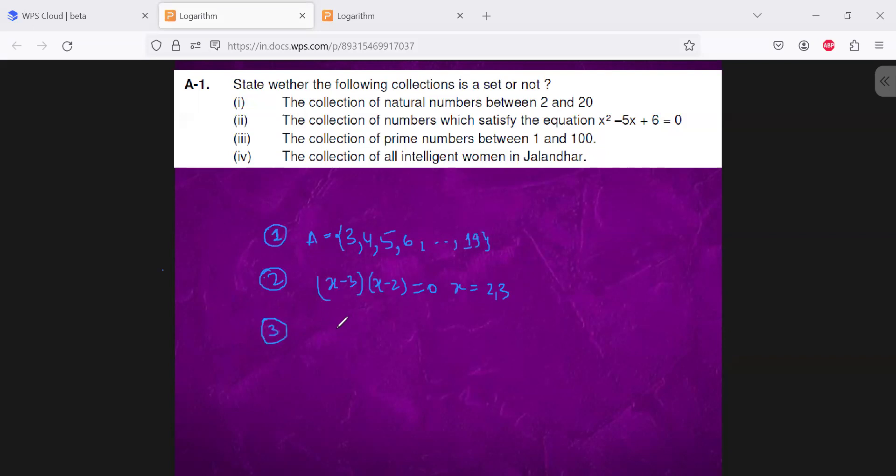Third, the collection of prime number between 1 to 100. So prime number will be like 2, 3, 5, 7, dot dot dot 97. So this is also a set of prime numbers.